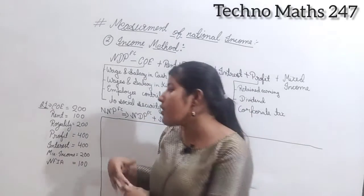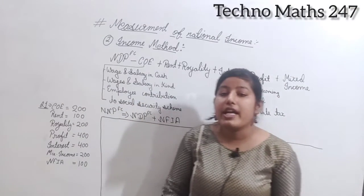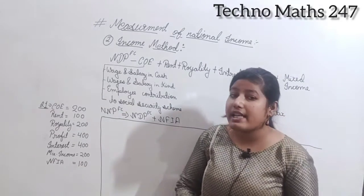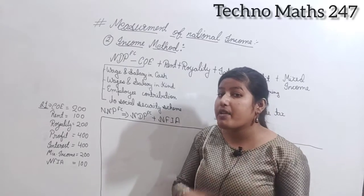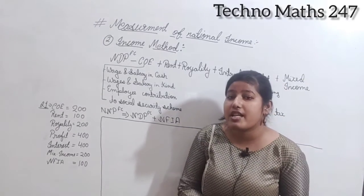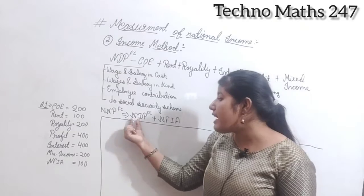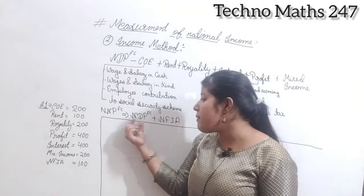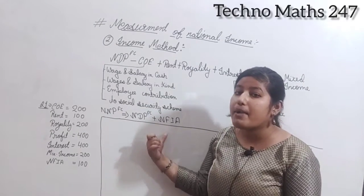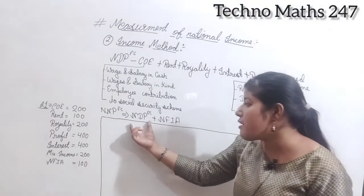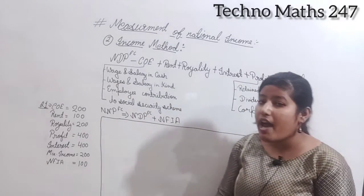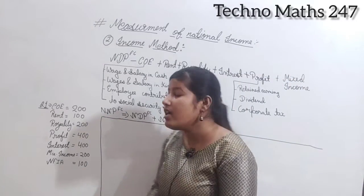But what we need to find is national income, which is NNPFC — Net National Product at Factor Cost. To find NNPFC, we go back to the concept of gross, domestic, net, national. Here, net stays net — no change. To convert domestic to national, we add NFIA. So: NDPFC + NFIA = NNPFC. Now let's come to our numerical.